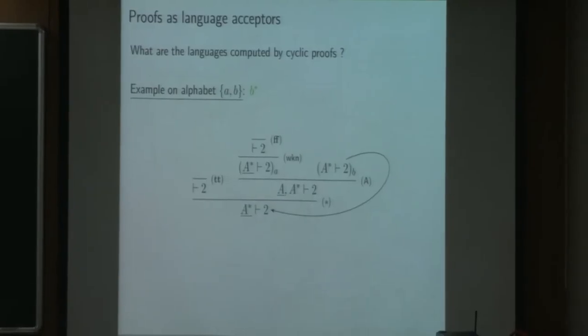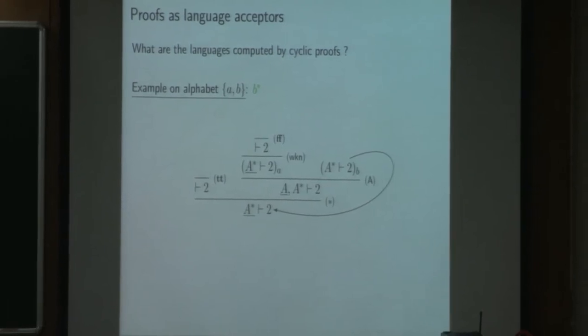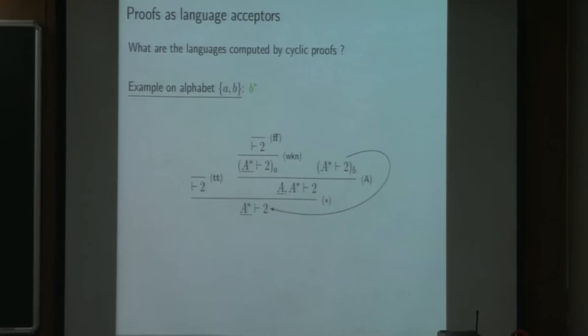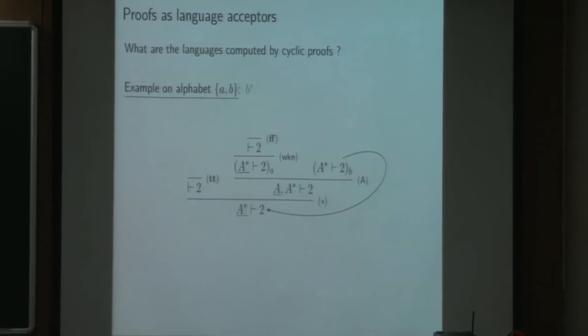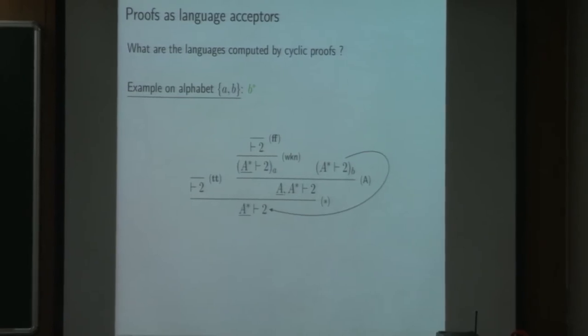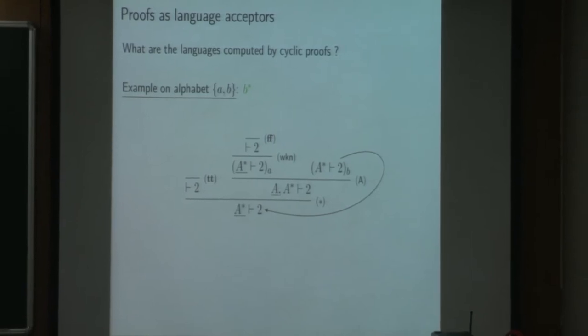So let's look at an example and how such a proof can represent a language. For instance, here we have a proof that recognizes the language B star. So we start from a sequence A star dash two. We apply a star rule. Either the word is empty and then it is in B star and we can apply the true axiom, or it is not and we get a letter. We can apply the letter rule. Either we have an A and then it is not accepted, so we will apply the false axiom. Or it is a B and then we can go back to the first step with the remainder of the word.